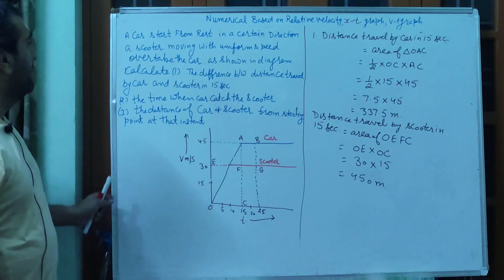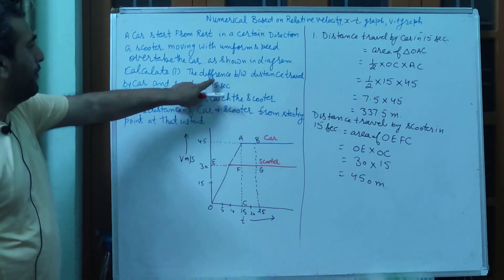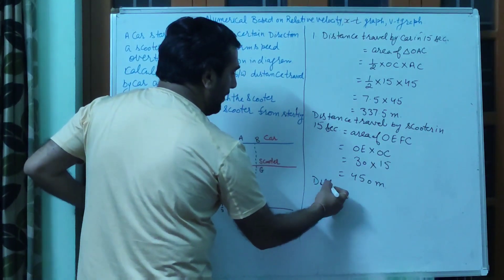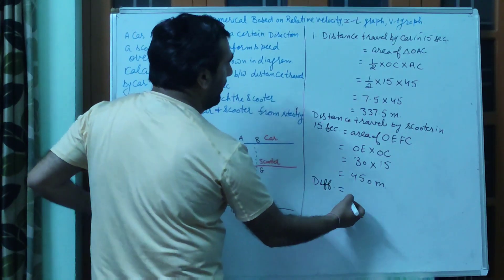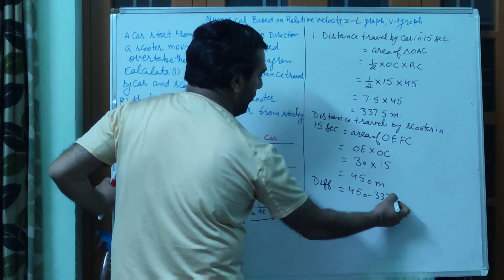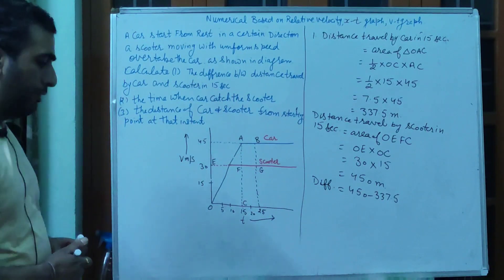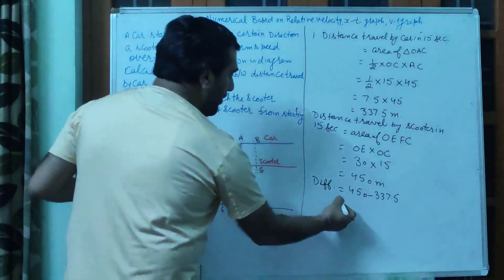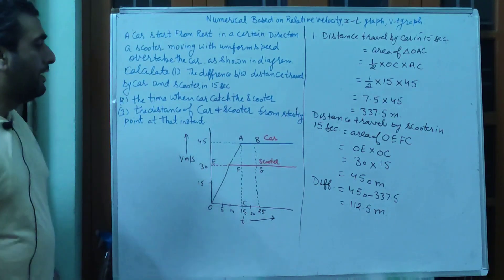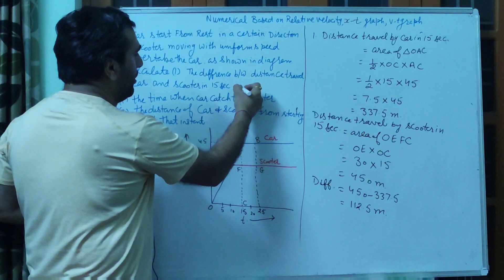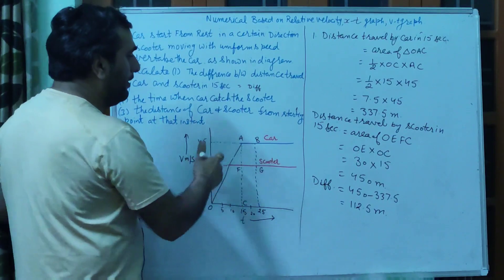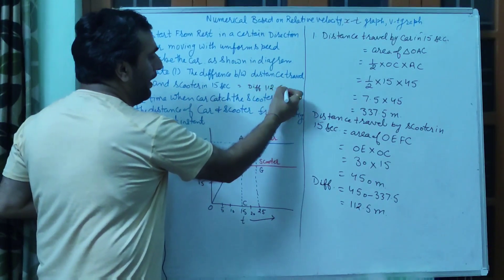Difference between the distance travelled by car and scooter = 450 minus 337.5। जब आप इसको solve करोगे, the answer will be 112.5 meter। तो difference within 15 seconds is 112.5 meter।